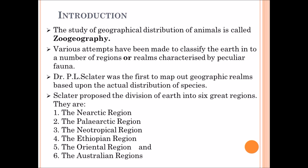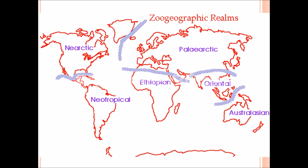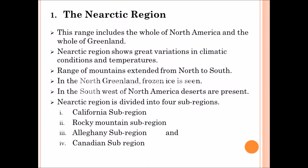The six regions are: Nearctic region, Palearctic region, Neotropical region, Ethiopian region, Oriental region, and Australian region. In this world map, you can easily see what types of realms — geographical realms — they are divided and distributed in the world map. You can also see all 6 regions in this map. We will study one by one.